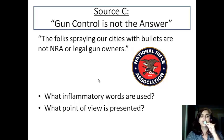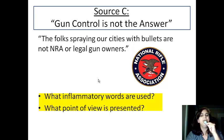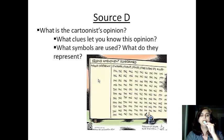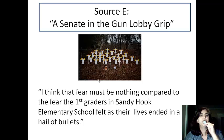Look at Source C: 'The folks spraying our cities with bullets, not NRA, or legal gun owners.' What inflammatory words are used? What point of view is presented? Look at Source D — what is the cartoonist's opinion? What clues let you know this opinion? What symbols are used, and what do they represent?